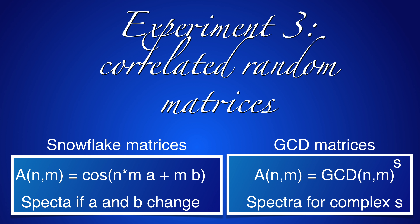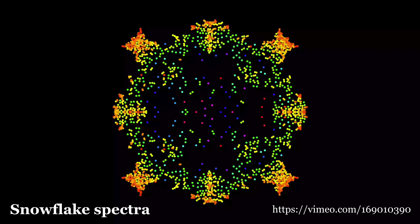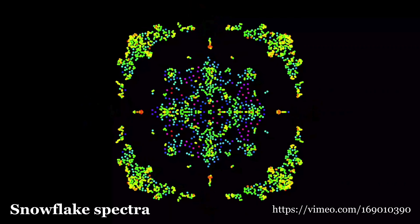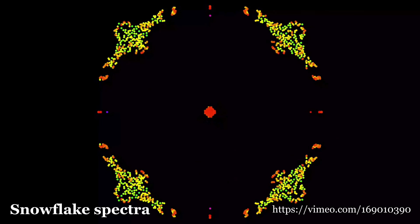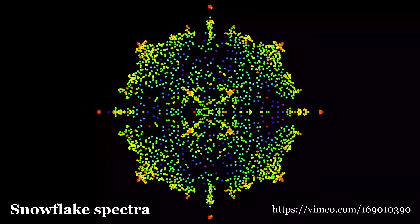Here's another experiment for which the mathematics is very much in the dark. It's part of random matrix theory, but the entries are not independent. The first example is snowflake matrices where we take the cosine where a and b are constants. The second are GCD matrices where we take the GCD of n and m to the power s, where s is a complex number. Here is an animation of these snowflake matrices — you can watch it on Vimeo. And here's a picture of a GCD spectrum featuring a spiral pattern.